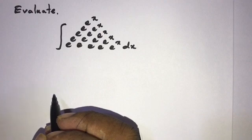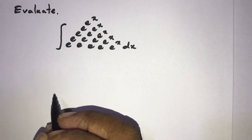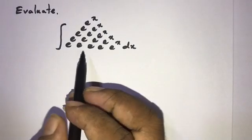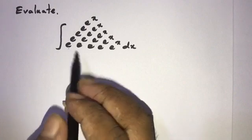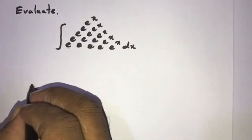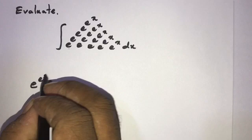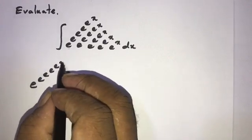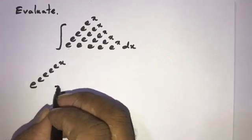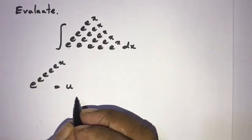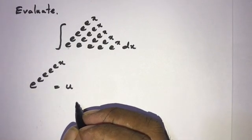We can solve this problem using the substitution rule. Let's replace this term by u, so we can write e^(e^x) = u. Before we continue with the problem,